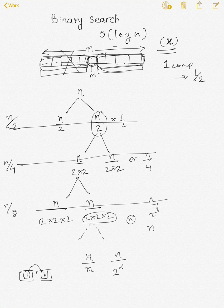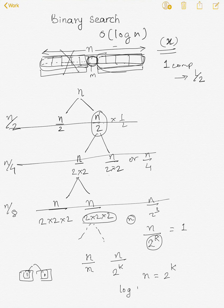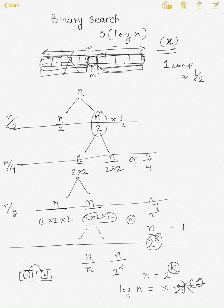At some point, 2^k will equal n, meaning n/2^k = 1, or n = 2^k. Taking log on both sides: log(n) = k·log(2). Since log(2) = 1, this gives us k = log(n). This k is the height of the recursion tree, or equivalently, the number of comparisons made.